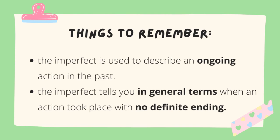Here are some things to remember when looking at the imperfect tense. Remember that the imperfect is used to describe an ongoing action in the past. Also, it tells you in general terms when an action took place with no definite ending.